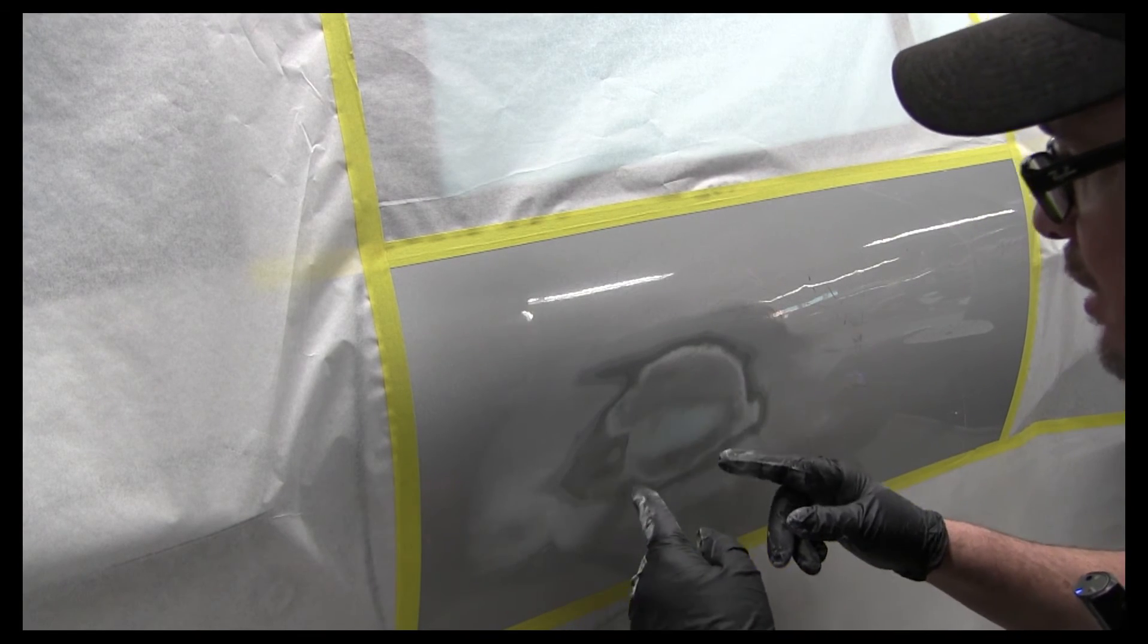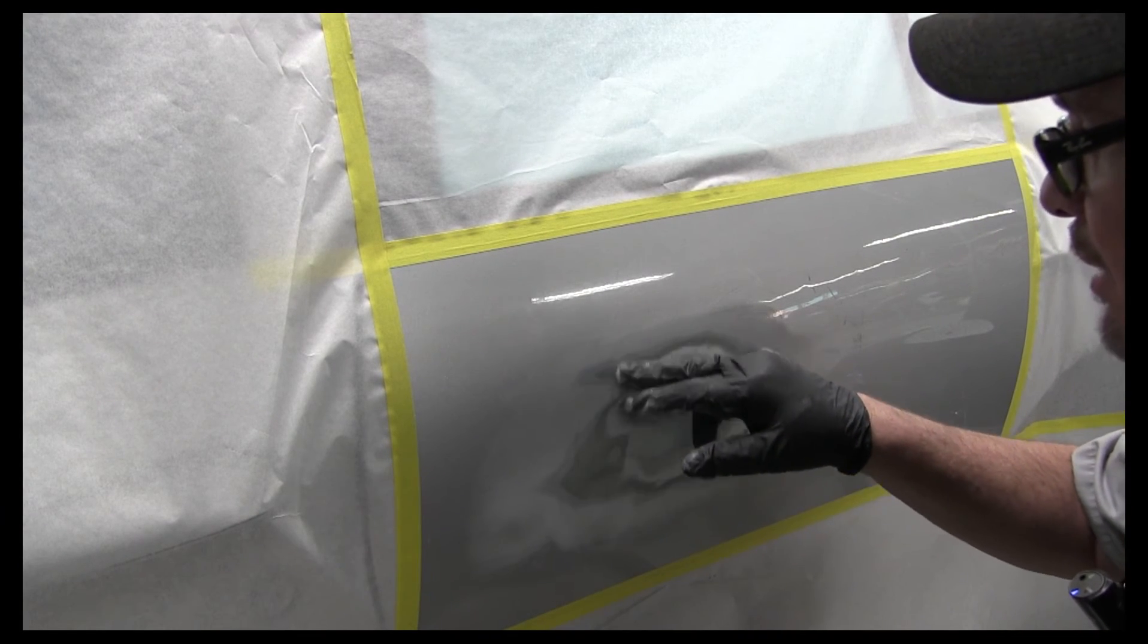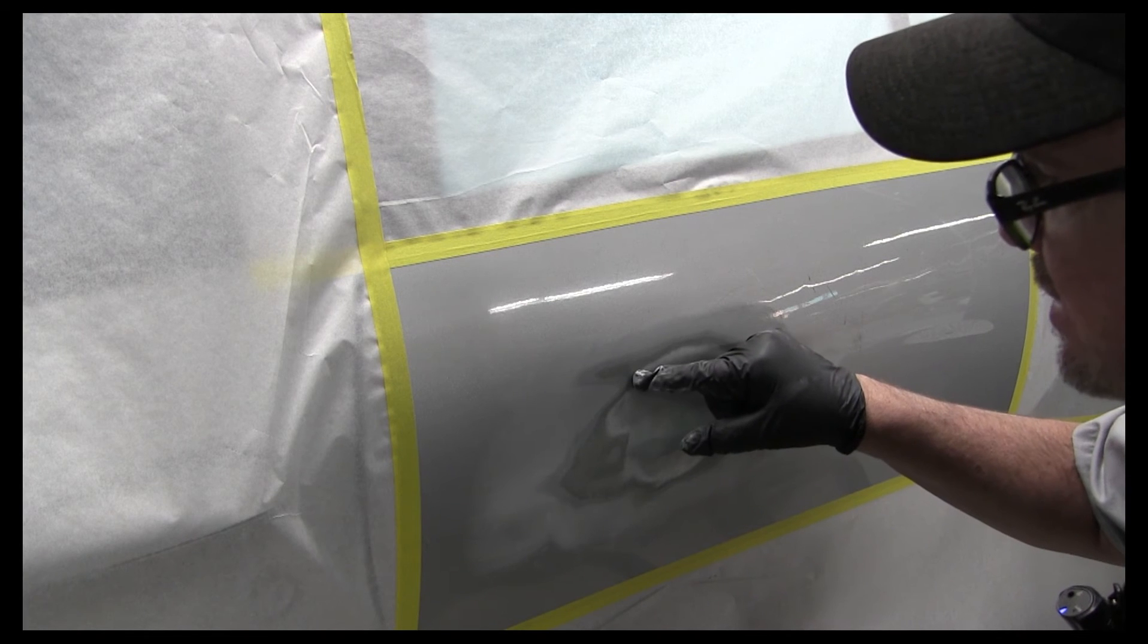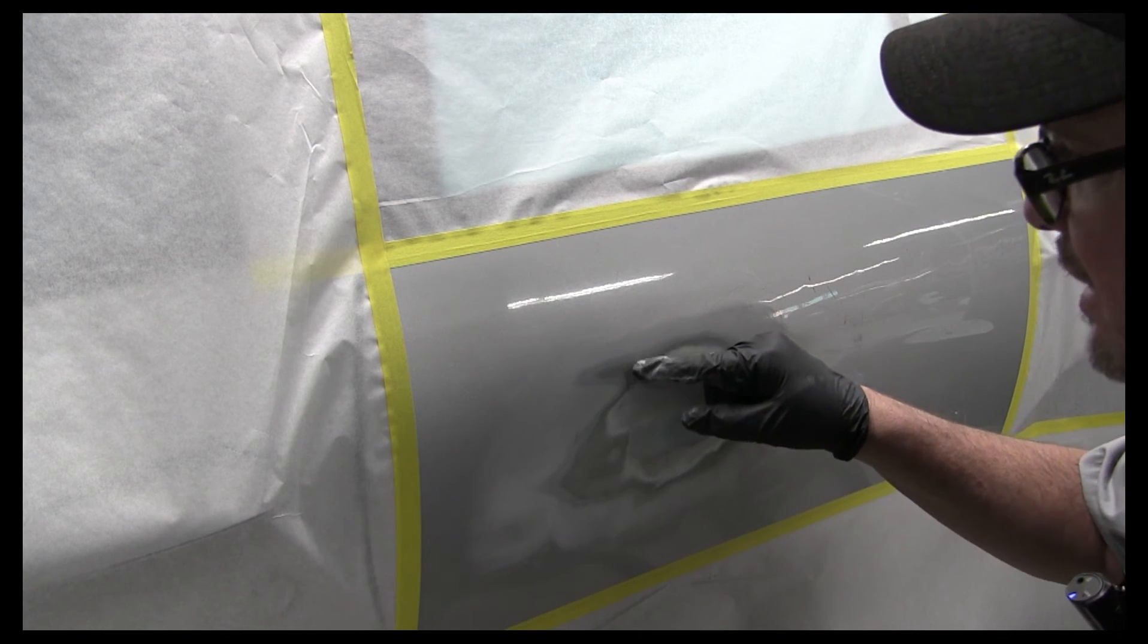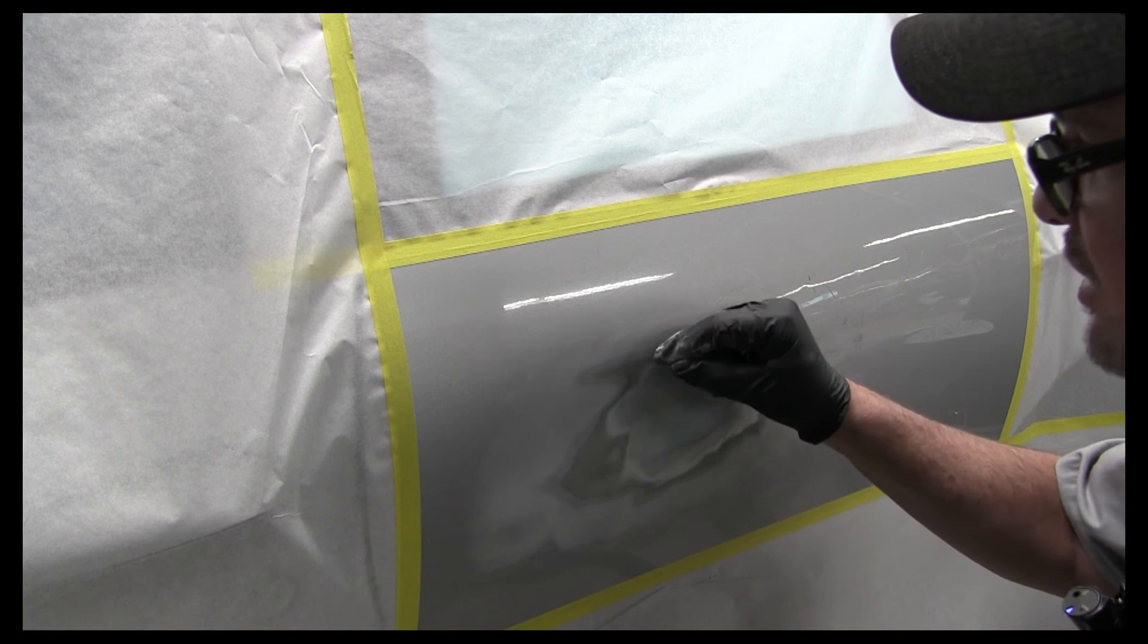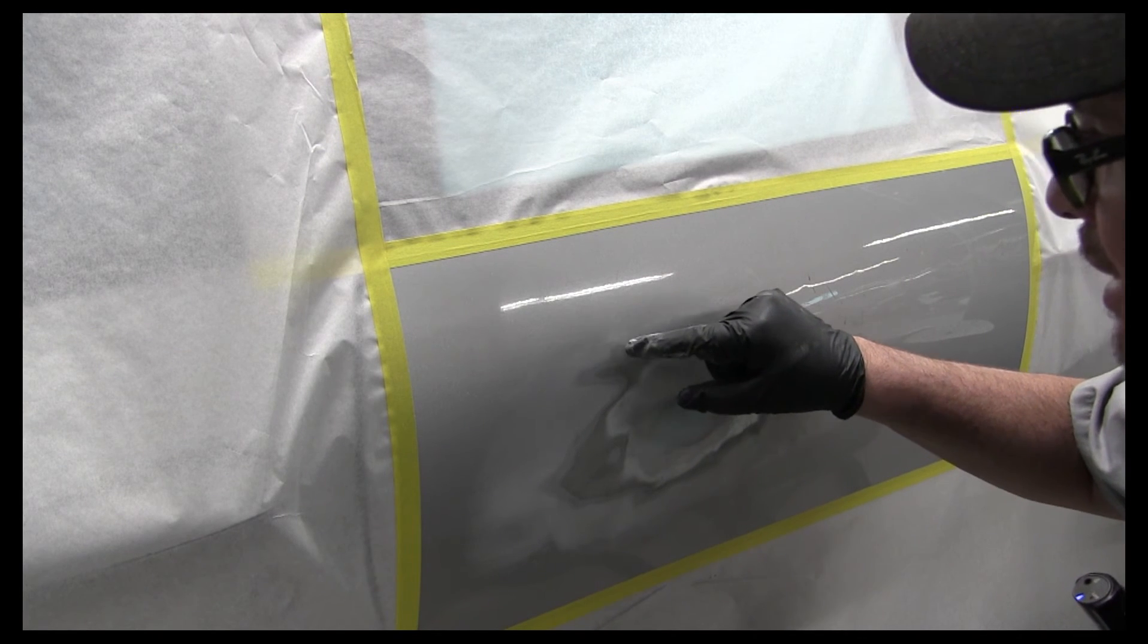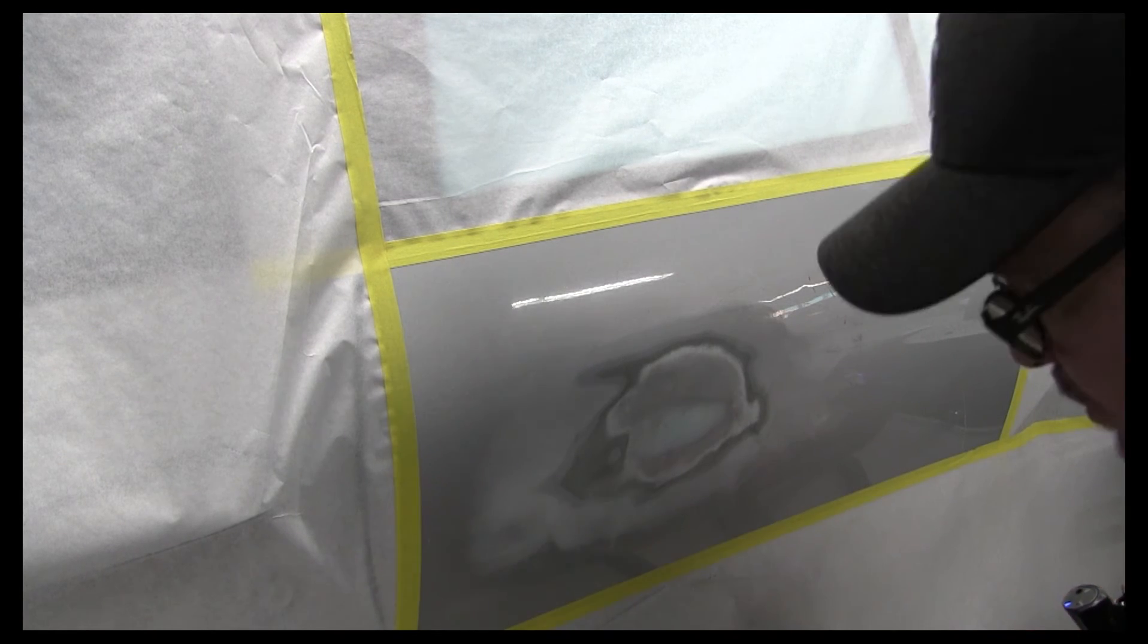I've got all the guide coat off and I've layered this, feather edged it. What that means is each layer of paint, you can see the layers. You want at least an eighth to a quarter of an inch of each layer. So you can see the different layers here. That way you won't see that when you paint it.